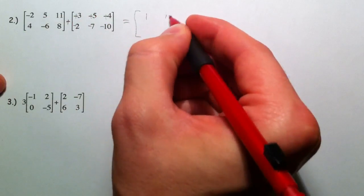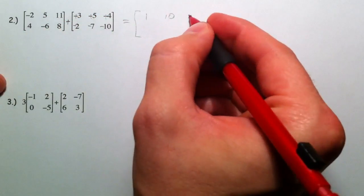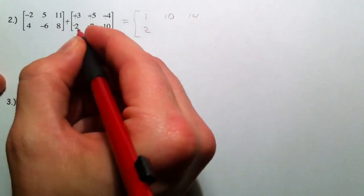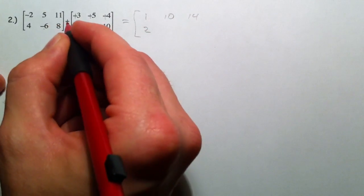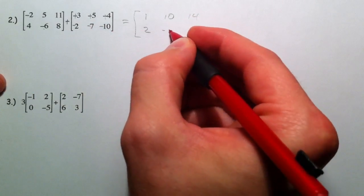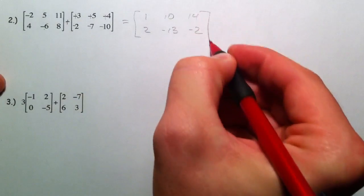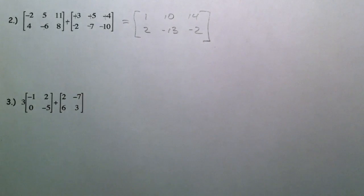5 plus 5 is 10. 11 plus 4, 4. Plus a negative 2. Negative 6 plus a negative 7, that's negative 13, becoming more negative. 8 and negative 10 is negative 2. So subtracting matrices.